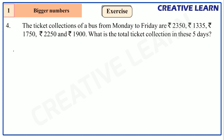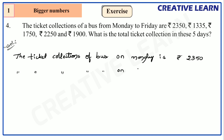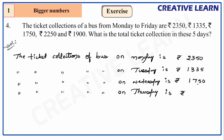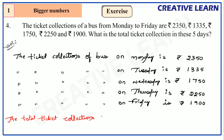Let's do the solution. We write the ticket collections day-wise respectively: 2350, 1335, 1750, 2250, and 1900. Now we have to add all of these to find the total ticket collections for the five days. In the ones place: zero plus five is five, five plus zero is five, zero is there again, so in the ones place we get five.